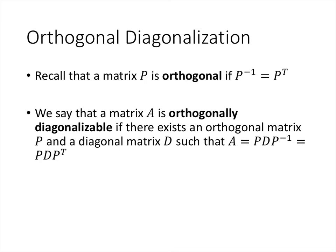A matrix P is orthogonal if its inverse is the same as its transpose, which is the same as the matrix having orthonormal columns. We say a matrix is orthogonally diagonalizable if not only is it diagonalizable — not only does there exist a diagonal matrix D and invertible matrix P such that A equals P D P inverse — but actually we can find an orthogonal matrix P, meaning P inverse equals P transpose. That's a much stronger condition.